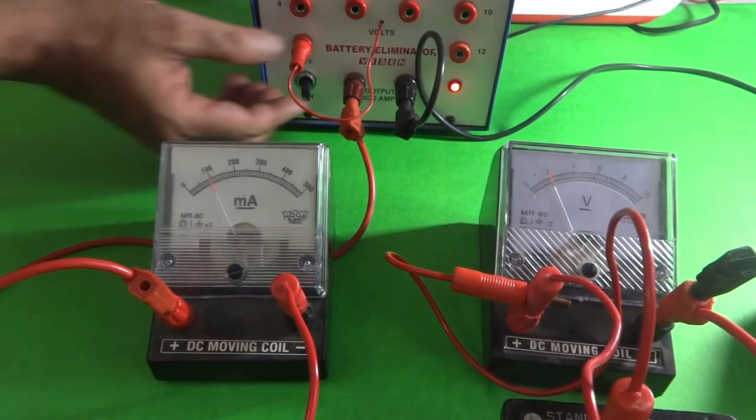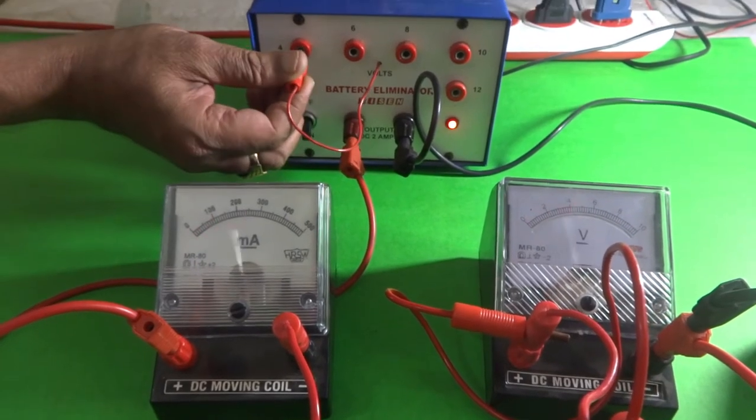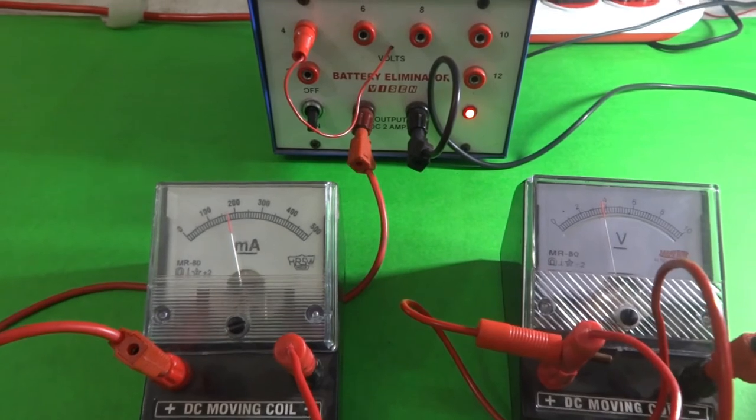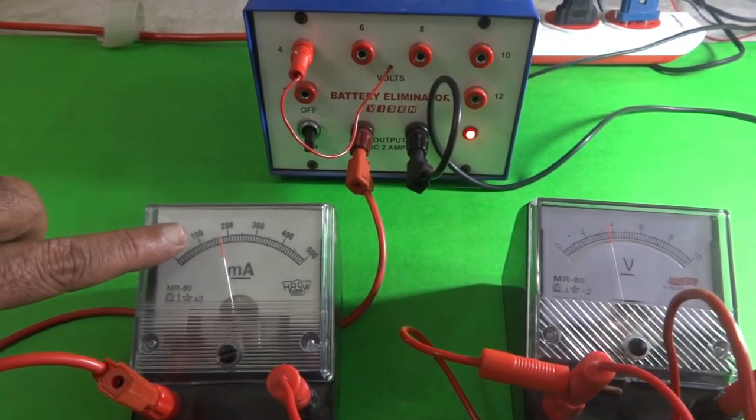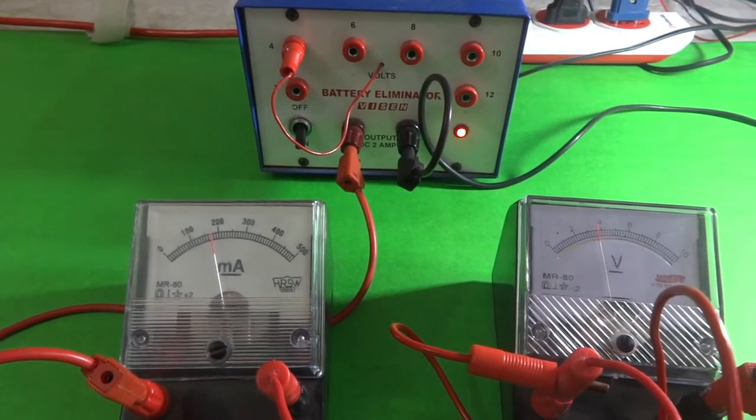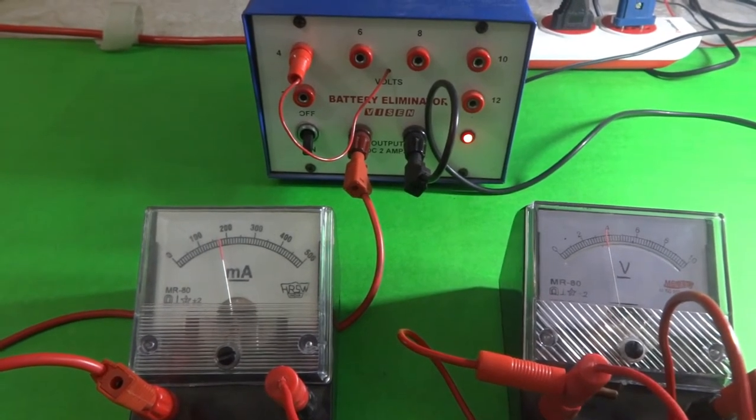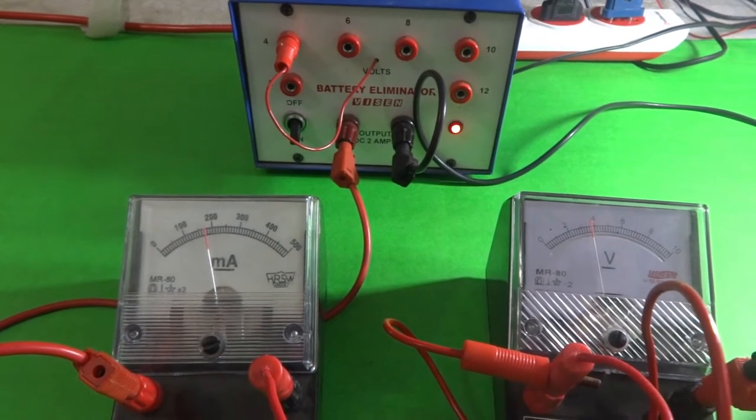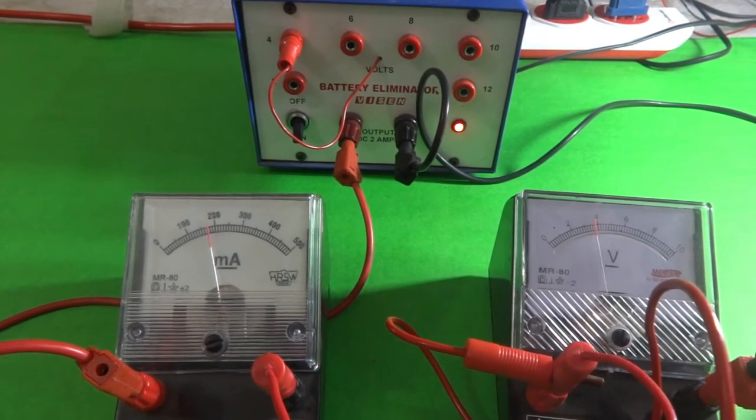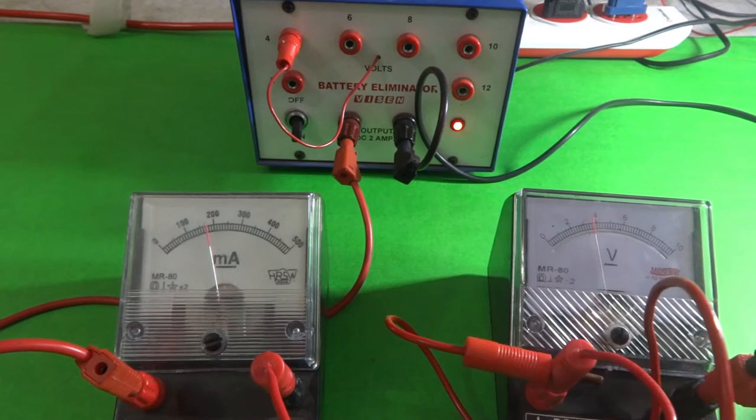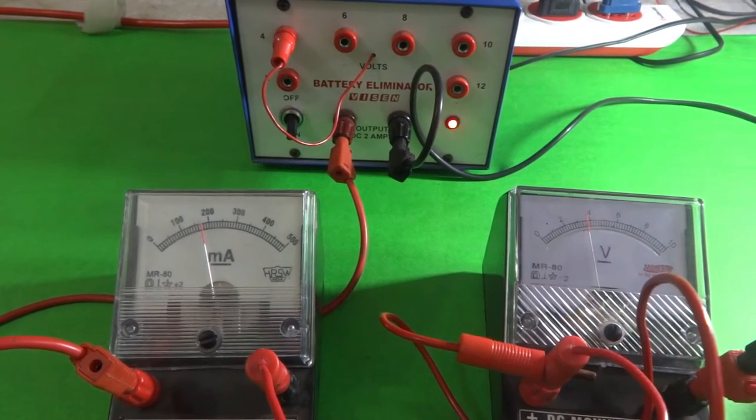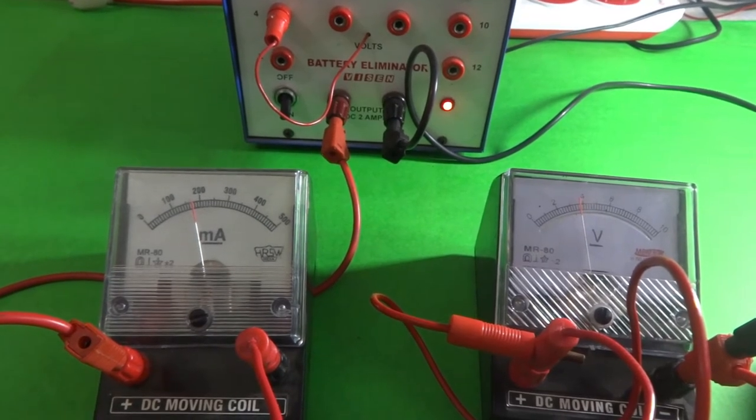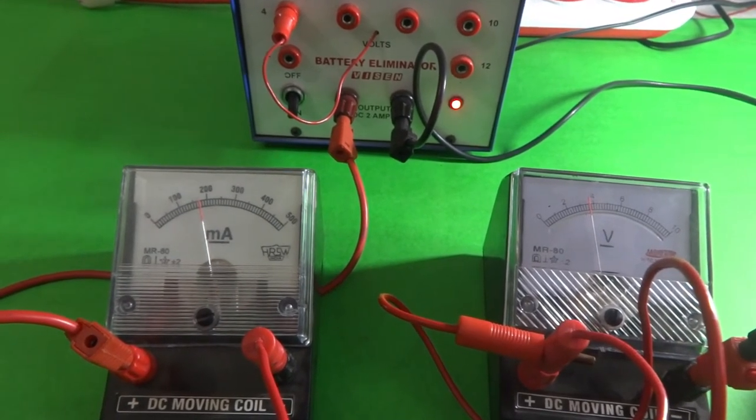Next I will operate it at 4 volts. Now you can read the reading in milliammeter is 190 milliamperes and here if you look at the voltmeter, it is 3.8. So again we got the ratio as 20.